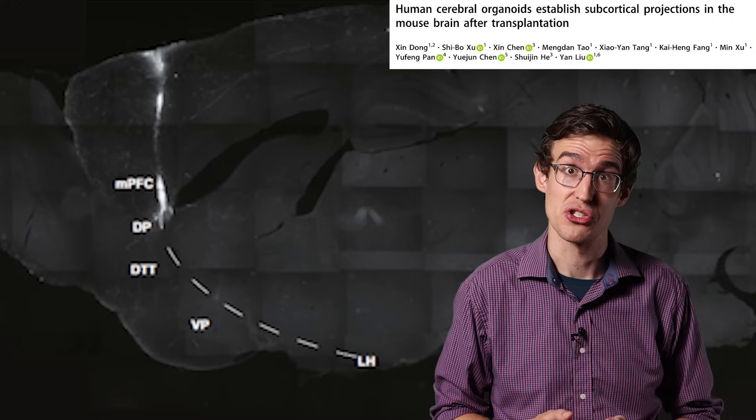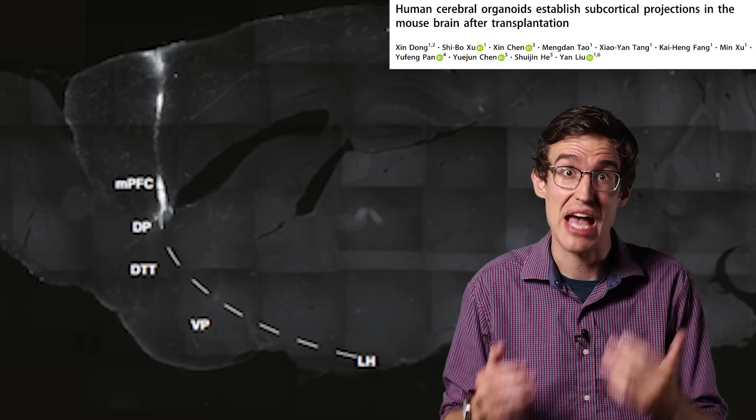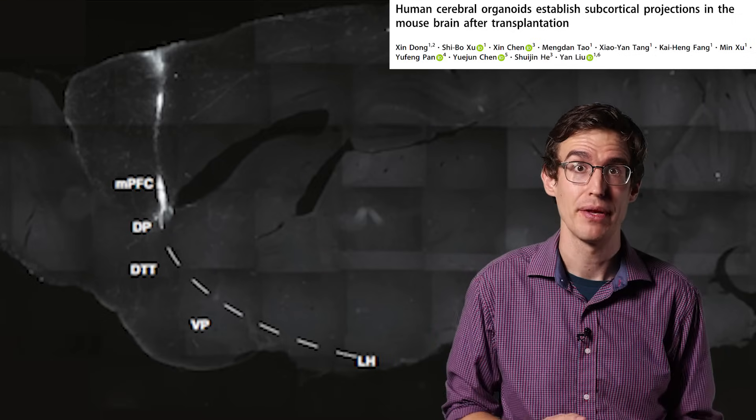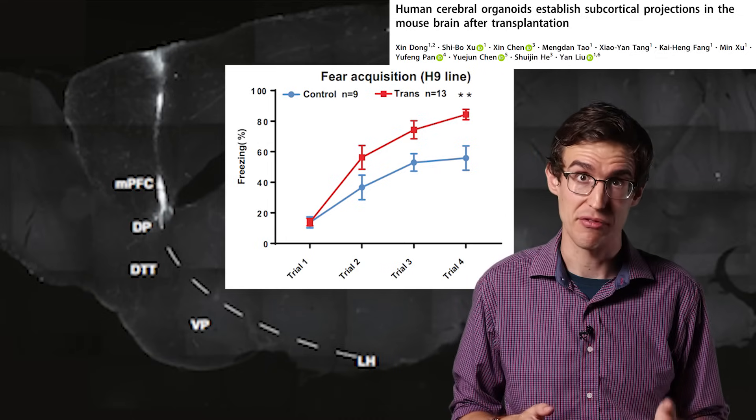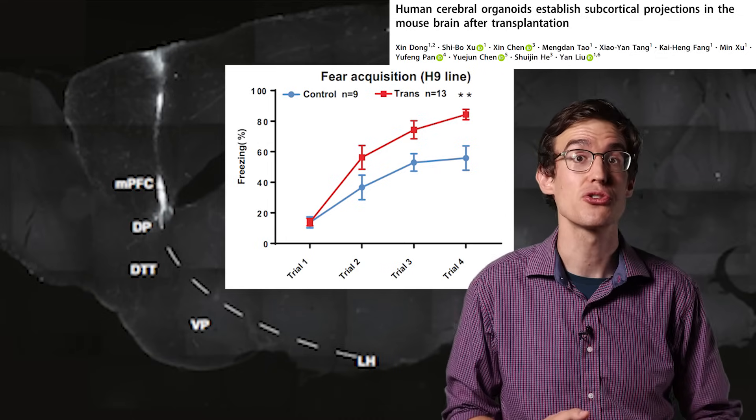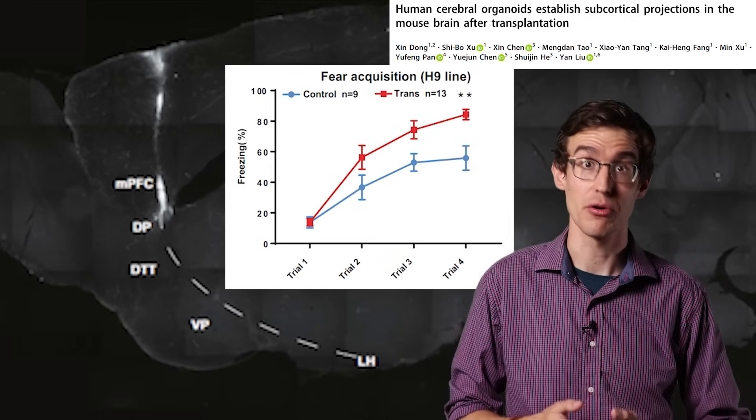Then they did a fear conditioning procedure where they played sounds and then zapped the mice with electric shocks. The mice with organoid transplants froze for longer after hearing the sounds, which the researchers interpreted as boosting the fear response.